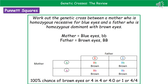The last step is to write down the chance of having a particular phenotype. Some questions will specify which phenotype they want; otherwise, make sure you state which phenotype you're referring to. In this case, all four boxes show brown eyes, so there's a 100% chance of brown eyes. You could also write that as four in four, a ratio of four to zero, or a fraction of four over four. Pick whichever format you're most confident with — percentage, ratio, or fraction — any will get you the mark.